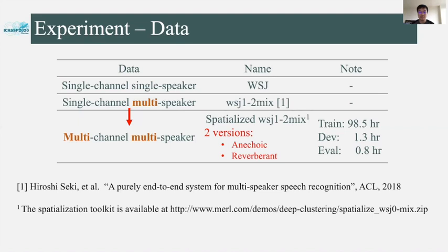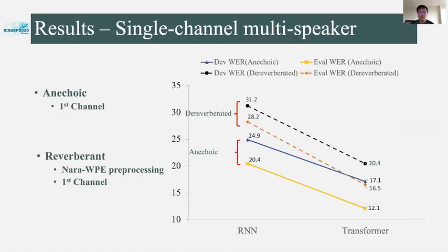We generated the dataset under two conditions. One is the anechoic condition, generated by only considering the delays and decays due to propagation. The other is the reverberant condition, which also considers reverberation, making it close to real conditions. To evaluate our single-channel multi-speaker model, we extracted the first channel in both conditions, and pre-processed the reverberant speech with an external dereverberation method. Results show that using the transformer model reduced the word error rate from 20.4% to 12.1% on the anechoic evaluation set, and from 28.2% to 16.5% on the reverberant evaluation set — over 40% relative improvement on both conditions.